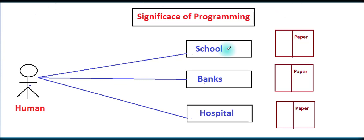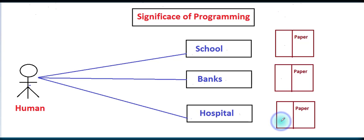آج سے دس سال پہلے school میں students کا سارا record paper پر رکھا جاتا تھا۔ Registers بنائے ہوئے تھے کہ کس student نے fees جمع کروائی ہے اور کس نے نہیں کروائی۔ اسی طرح banks میں بھی ہر account کا record register میں لکھا جاتا تھا اور جب پیسے نکلواتے تھے تو register میں رقم کاٹ دیتے تھے۔ Hospital میں بھی patients اور doctors کا سارا record paper پر registers میں رکھا جاتا تھا۔